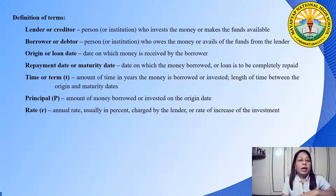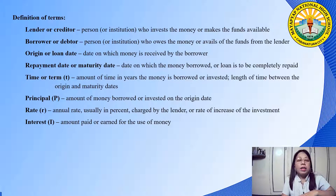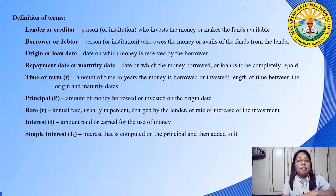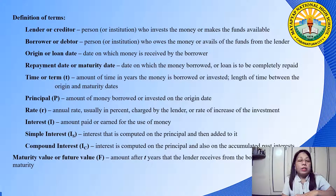The rate refers to the annual rate, usually in percent, charged by the lender or the rate of increase of the investment. Interest is the amount paid or earned for the use of money. Simple interest is interest that is computed on the principal and then added to it. Compound interest is computed on the principal and also on the accumulated past interest. Maturity value or future value is the amount after the term that the lender receives from the borrower.